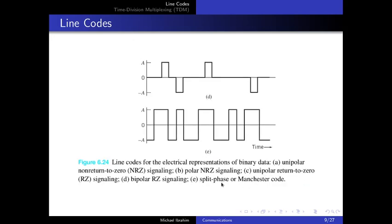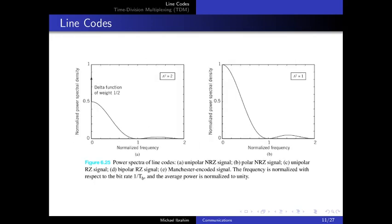Manchester code is optimal for synchronization: even with long sequences of ones, you get two falling edges, and with long sequences of zeros, you get two rising edges. There are always transitions, making it easy to extract the clock. However, as always, there is no free lunch — Manchester code achieves better synchronization at the cost of increased bandwidth.